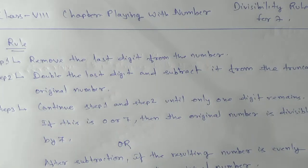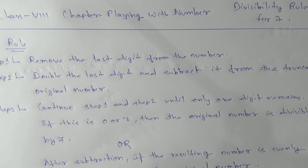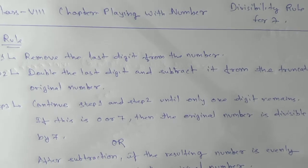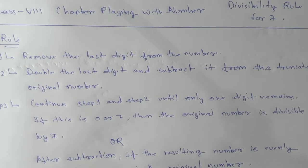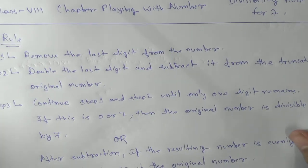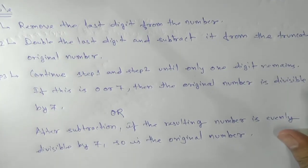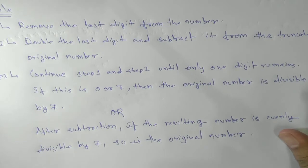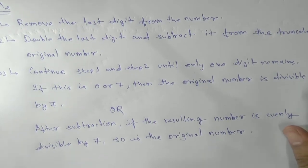Namaste students. Today we are going to see the divisibility rule for 7. The step is: first we will take the number and then see the last digit, which means the unit digit. Take the unit digit, double it — that means multiply by 2 — and then subtract from the truncated original number. We continue this step until we get our result.